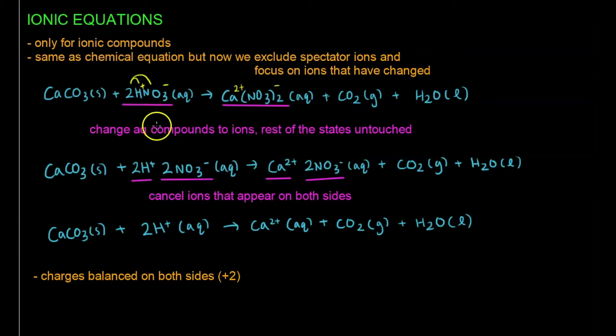And then, after I've changed all the aqueous compounds to ions, the rest of the states, I remain untouched. So what do I mean? I just copy them back, so CaCO3 remains as CaCO3, carbon dioxide remains as carbon dioxide, H2O remains as H2O liquid. Now the next step is the final step, is to cancel all the ions that appear on both sides.